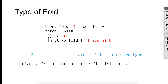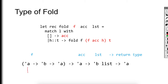The return type of fold will eventually be the accumulator itself, meaning the return type is also 'a. So the type of the higher order function fold is: fold takes three arguments. The first argument is a function of type ('a -> 'b -> 'a). It also takes an accumulator of type 'a and a list of type 'b list, and eventually returns type 'a.